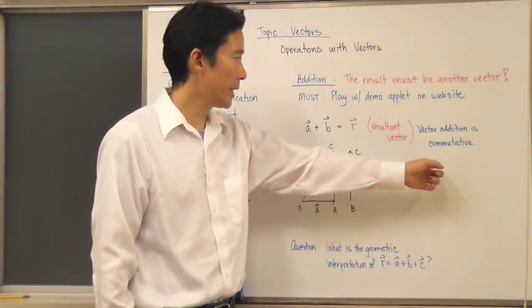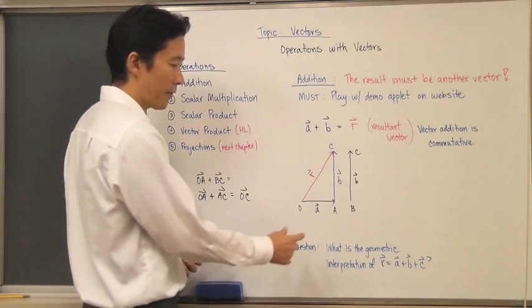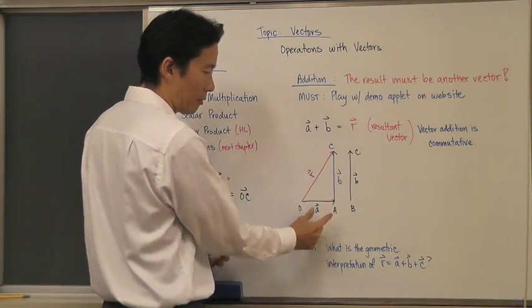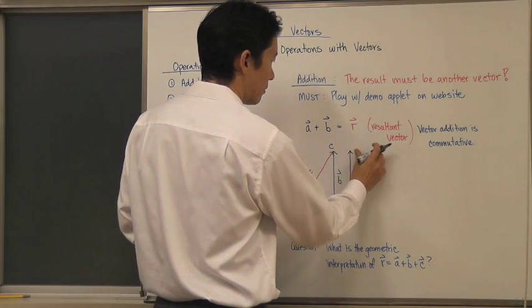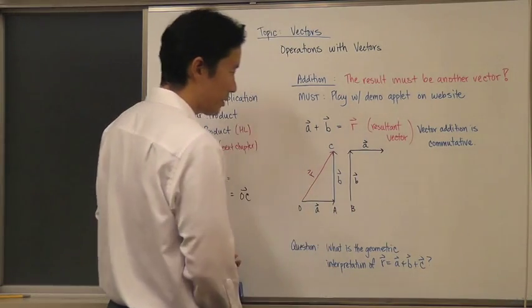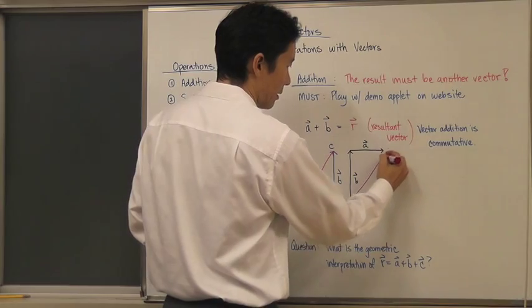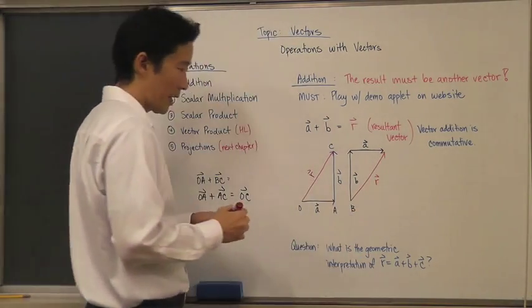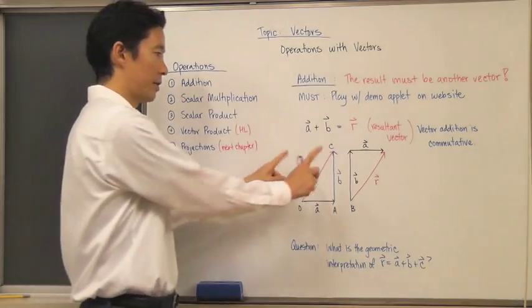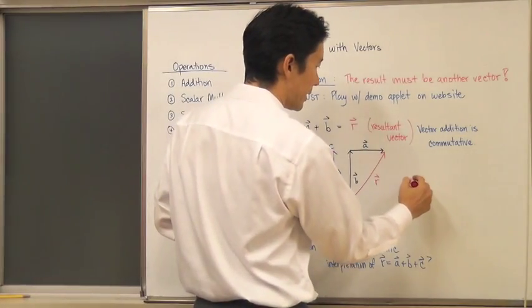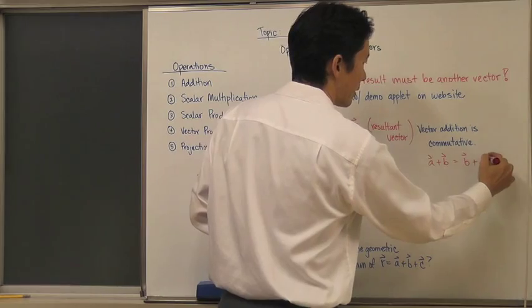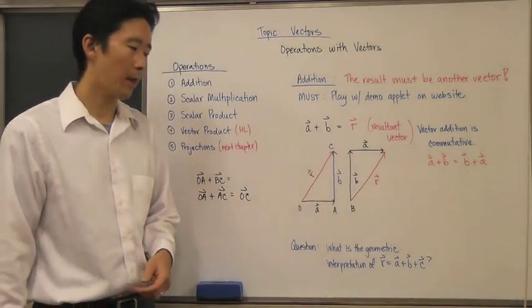Vector addition is commutative. If I went from O to B and then placed vector a accordingly, the resultant vector would have exactly the same magnitude and the same direction. Therefore those two are going to be equal. So we can say that the vector addition of a plus b is going to be exactly the same as the vector addition of b plus a.